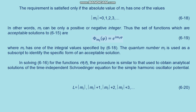The quantum number m_l is used as a subscript to identify the specific form of an acceptable solution. In solving equation 6.16 for Theta(theta), the procedure is similar to that used to obtain analytical solutions for the simple harmonic oscillator potential. It is found that acceptable (finite) solutions to 6.16 are obtained only when the constant l is equal to one of the integers: l = |m_l|, |m_l|+1, etc. (formula 6.20), and the acceptable solutions are written as formula 6.21.